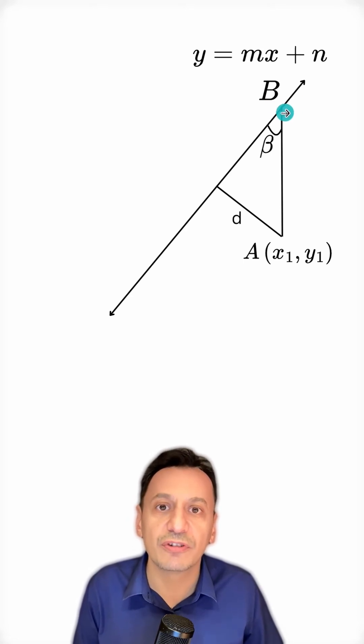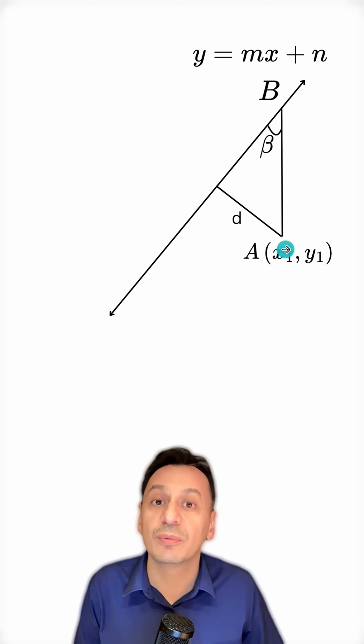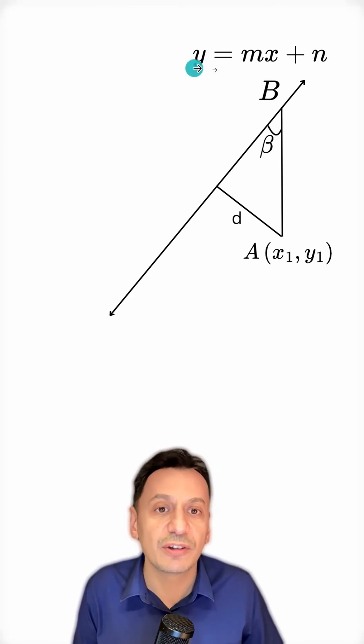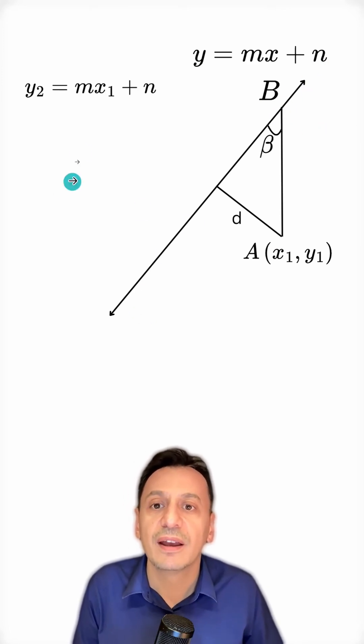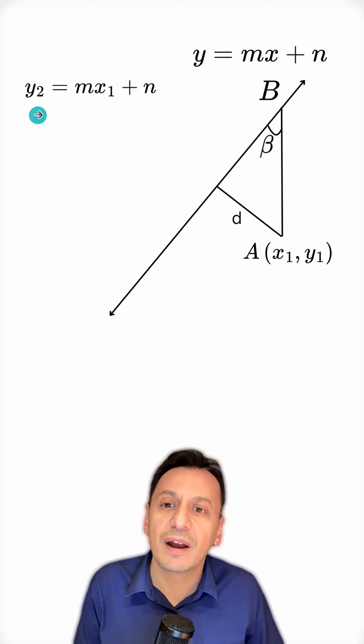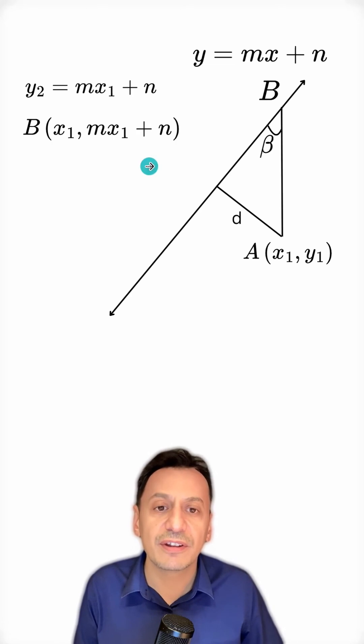Now, let's find the coordinates of point B. Since point B is aligned with point A, their abscissas will be the same. Therefore, we can also call the abscissa of point B x₁. When I substitute this x₁ value into the equation, I will find the ordinate of point B, because point B lies on this line. Now, I substituted x₁ and calculated the ordinate. So now I can write the coordinates of B.